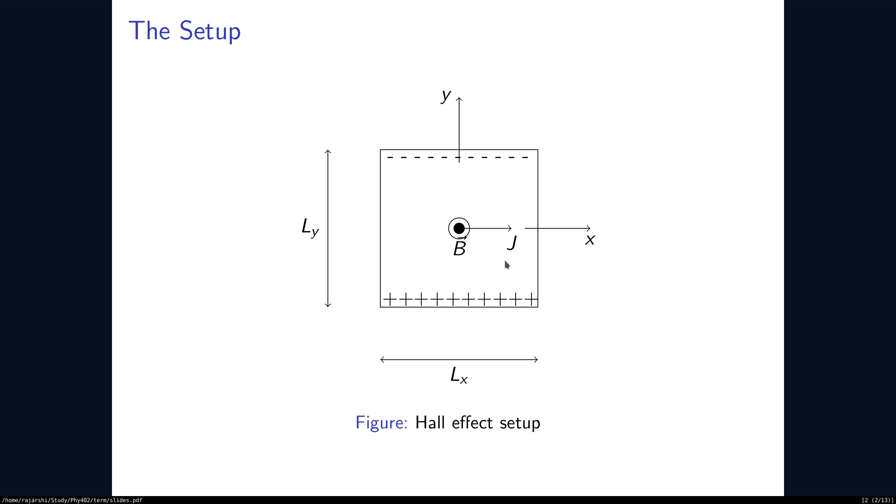Here we have a material which can be a semiconductor or a metal and through this we pass a current in the x direction. The current density J is in the x direction. And we apply an external magnetic field perpendicular to this which is in the z direction.